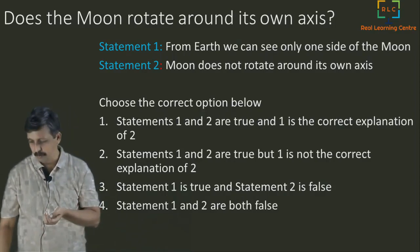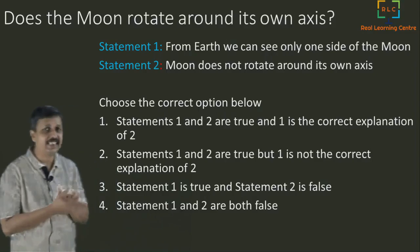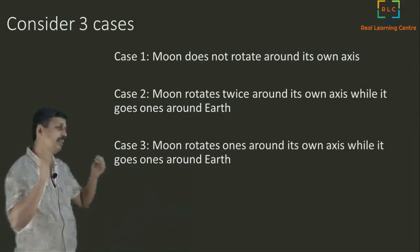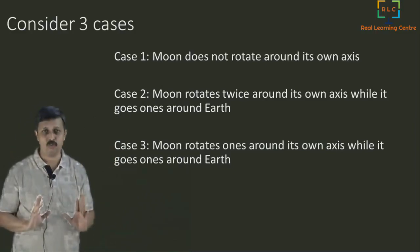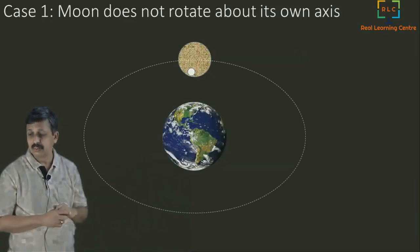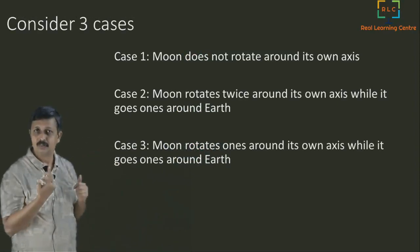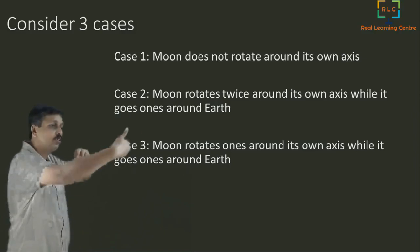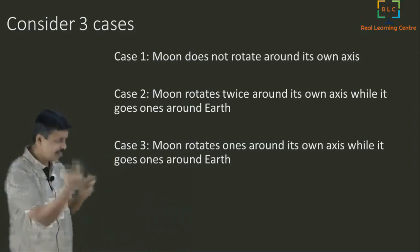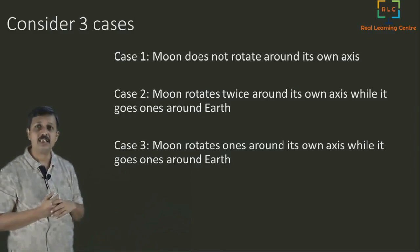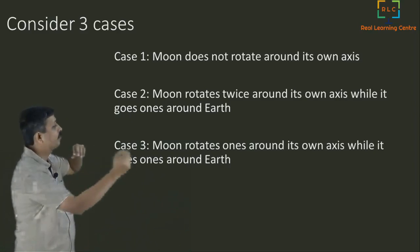Let us consider how rotation and revolution can happen together by taking three cases. Case one: the moon does not rotate around its axis but simply goes around the Earth. Case two: the moon rotates twice around its own axis before completing one orbit around the Earth — it rotates faster, twice as fast, just as an example. Case three: the moon rotates only once around its axis by the time it finishes one full orbit around the Earth.